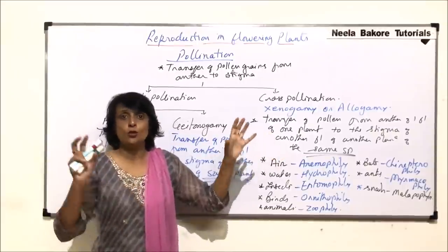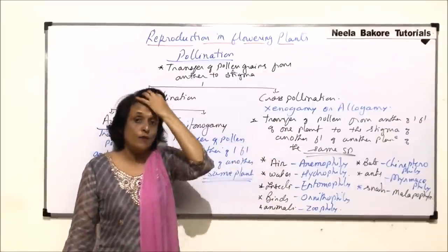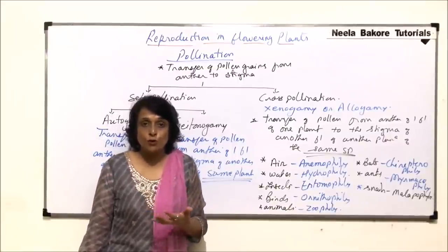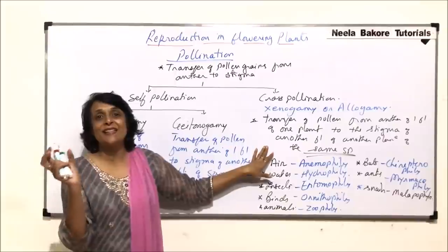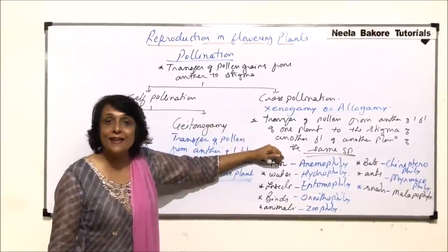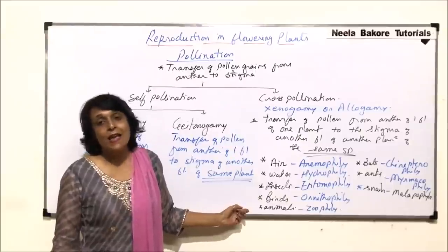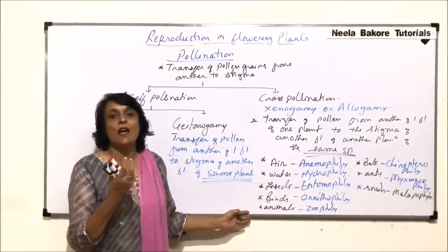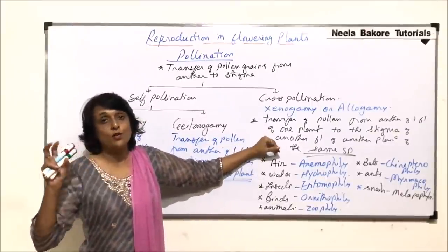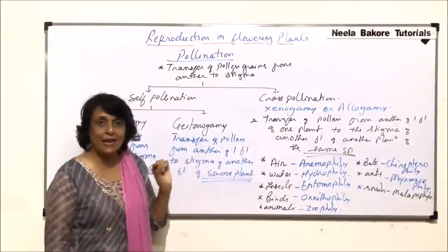In cross-pollination, mixing of two different gene pools occurs. The chances of hybrid vigor are more, meaning the next progeny produced would have better characters from both parents, which helps in evolution. The drawback is that because it depends on an external agency, if that agency fails, then seed formation and production of the next generation becomes difficult.